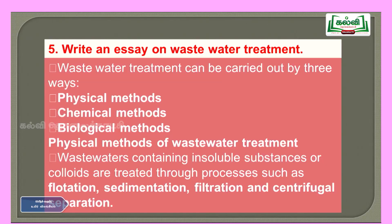Fifth question: write an essay on waste water treatment. You have a flow chart in your textbook which you can memorize. When asked for an essay, you have to explain the physical methods, chemical methods and biological methods, and you can draw the outline of the diagram since it is a five marks question. Waste water treatment can be carried out by three ways: physical methods, chemical methods and biological methods.